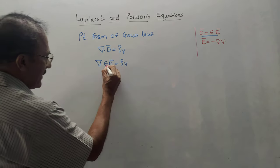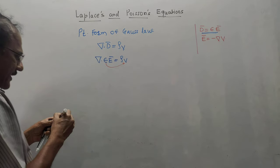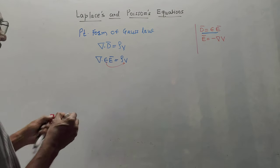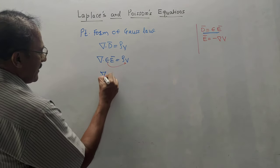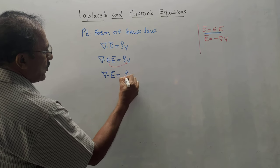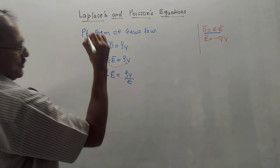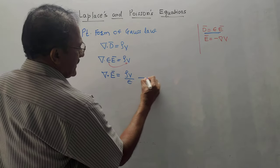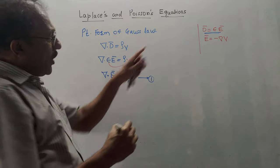This gives us ∇·Ē = ρV/ε. Let us call this equation number one.